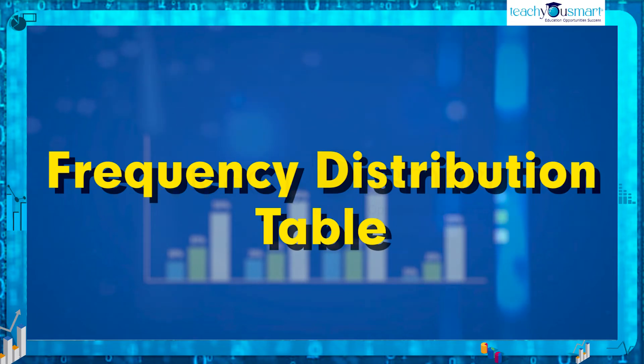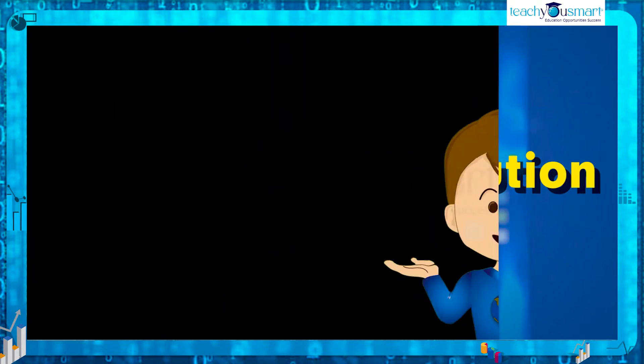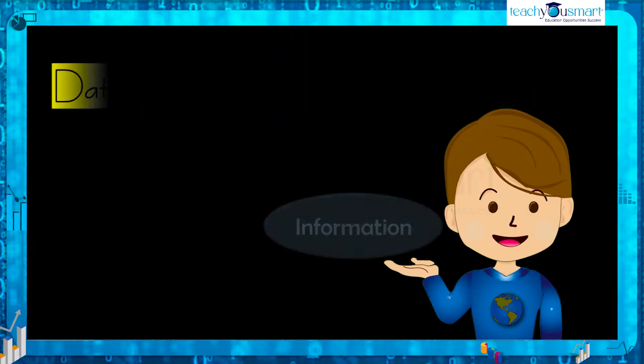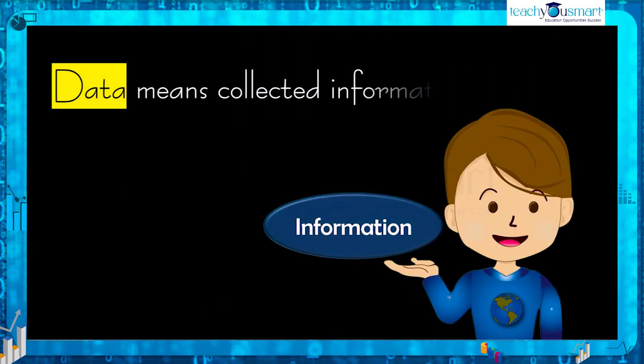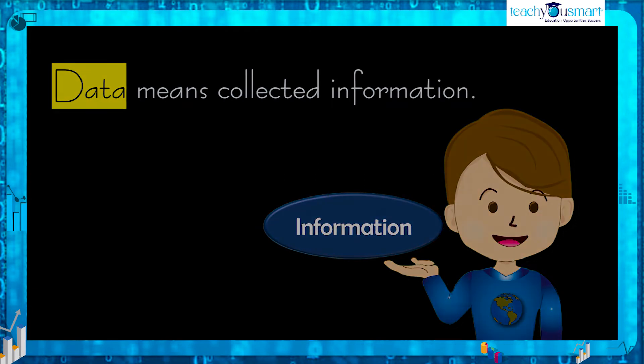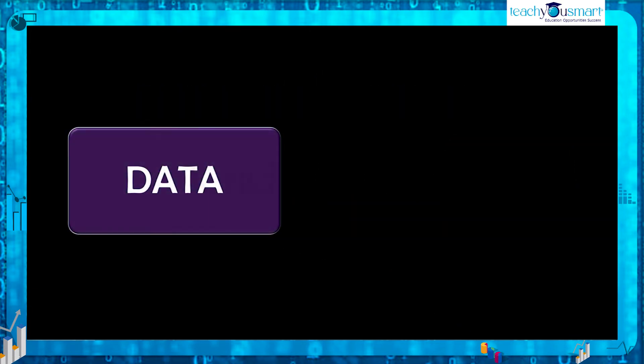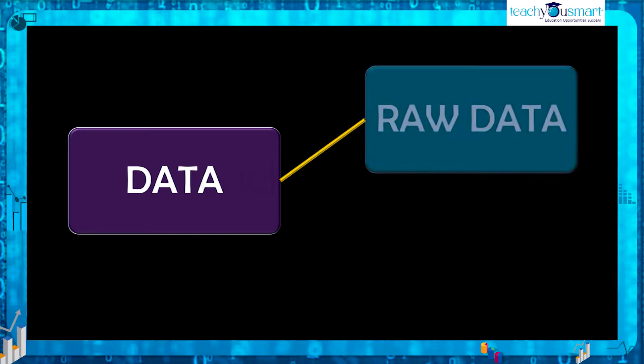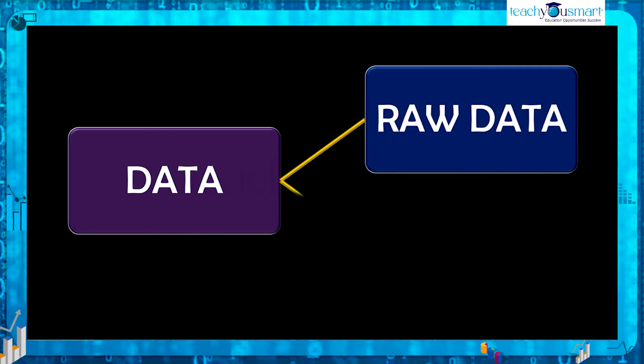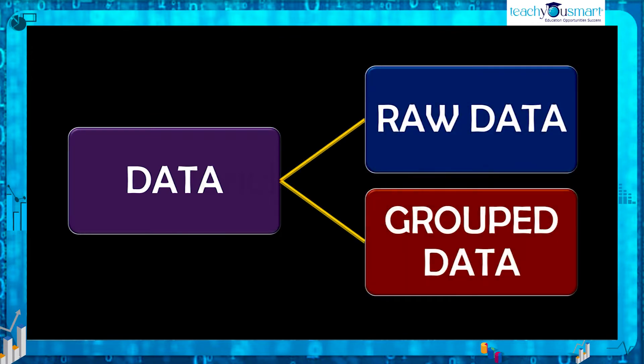As we have already studied, the word data means collected information. There are two types of data: raw data and grouped data.